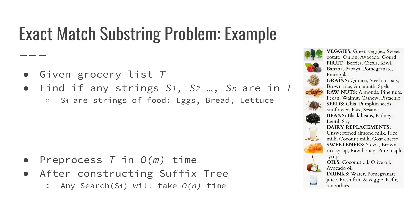A more concrete example would be: given a grocery list as our text, our patterns could be different words of food — like eggs, bread, lettuce — to see if there's an exact match of these food items in our grocery list. So we want our preprocessing time to be O(M), where M is the length of the text, and we want our search time to be O(N), where N is the length of each pattern or string that we're searching.